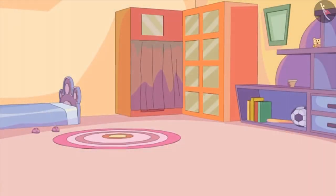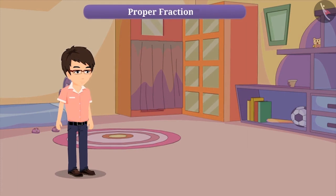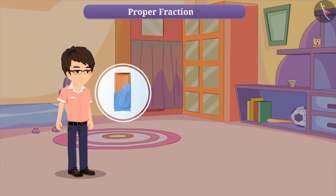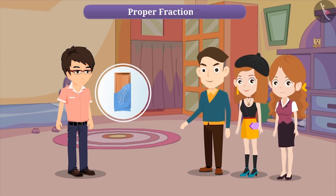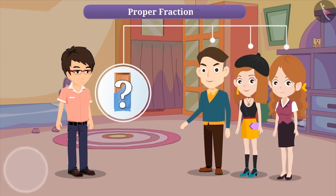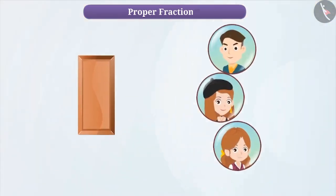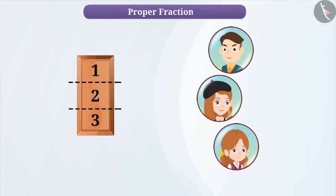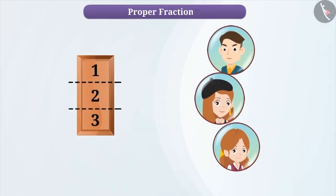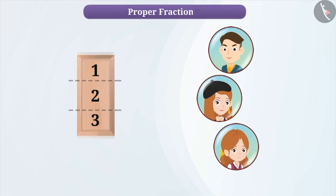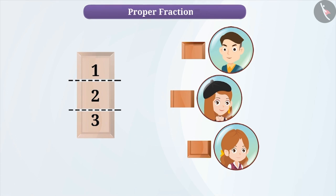Let's start this video with an interesting question. If you have one chocolate and you have to divide it equally among three persons, then how many pieces will each person get? Think about it. To achieve this, we have to divide the chocolate into three equal pieces so that each person gets one piece. By doing so, each person will get one by three of the whole chocolate.